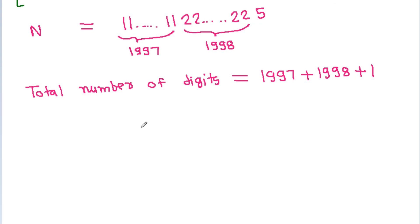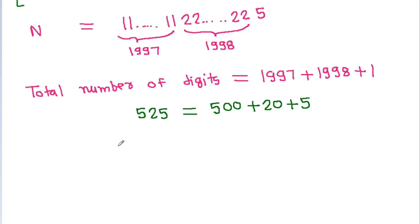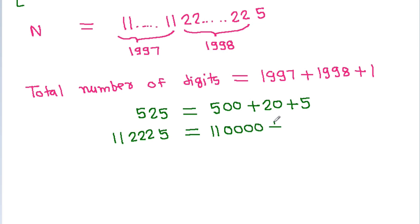Any number like 525 can be written as 500 plus 20 plus 5. Similarly, 1,1,2,2,2,5 can be written as 1,1,0,0,0,0 minus 2,2,2,2,0 minus 5.